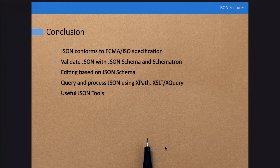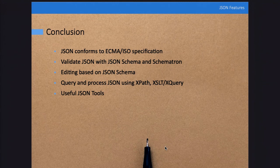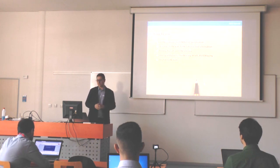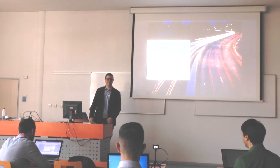As a conclusion, JSON is a format used together with XML and has a specification. You can check if a JSON document is well-formed and valid using JSON schema. You can also use Schematron to validate JSON documents and add co-constraints or rules that cannot be done with JSON schema. You can query and transform JSON with XSLT or XPath. And you have tools to generate a JSON schema from XSD, generate a JSON schema from an instance, or generate sample files from a JSON schema.